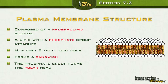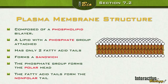We have a phosphate group forming a polar head, and then we have the fatty acid tails forming the non-polar tails in the center. Is there water inside the cell? Yes. Is there water outside the cell? Yes. So you want the polar heads to be on the outer ends so they can be exposed to the water on both sides.